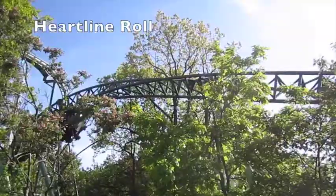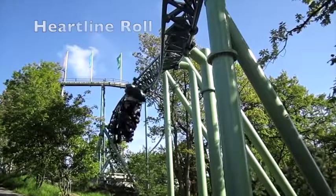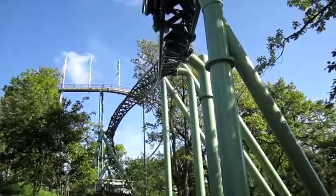The Elix ride finishes with the heart line roll. The rider moves essentially in a straight line, while at the same time rotating around an imaginary line approximately at the level of the heart.